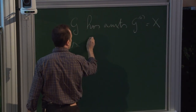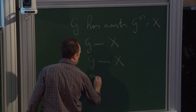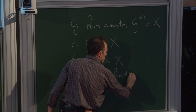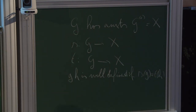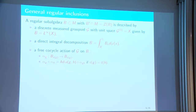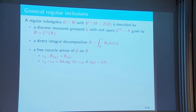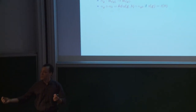There is an action of the group groupoid on this field of II₁ factors. The group groupoid has units being the space X, with a source map and a target map, and composition when things match. For every element in the group groupoid you get an isomorphism from the algebra at the source to the algebra at the target. It's not exactly an action — there is a 2-cocycle obstruction: the composition of the two is up to an inner automorphism, with the unitaries U satisfying the obvious 2-cocycle relation. The fibers are isomorphic along the orbits.